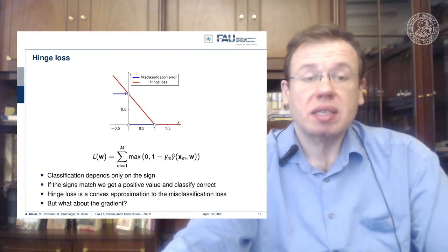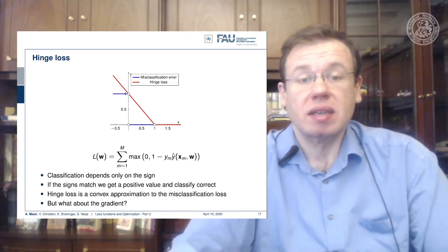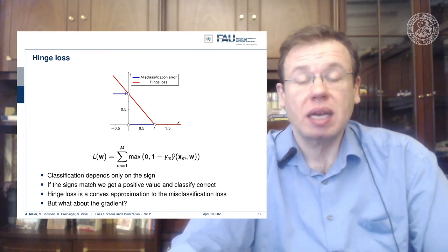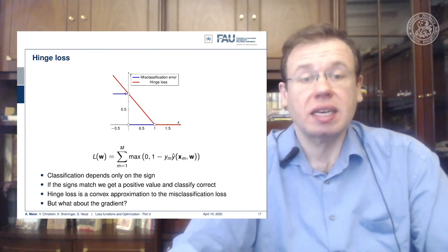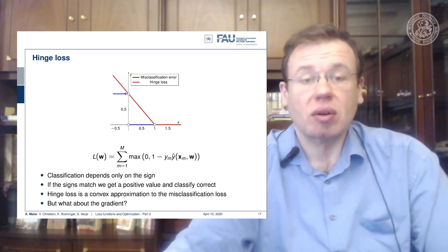One big thing about this kind of optimization problem is of course the gradient, and this loss function here has a kink. The derivative is not continuous at the point 0.1, so it's unclear what the derivative at 0.1 is, and now you could say, okay, I can't compute a derivative of this function, so I'm doomed.